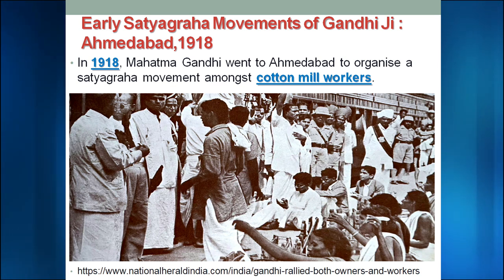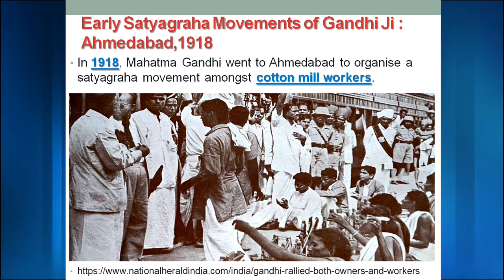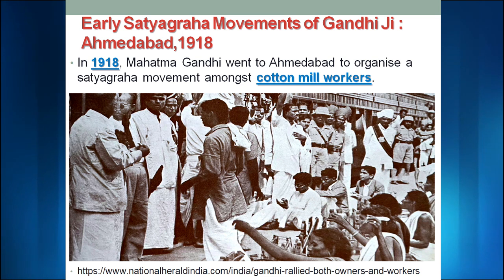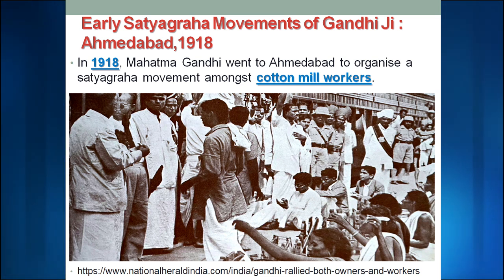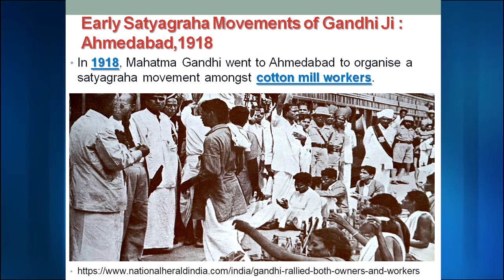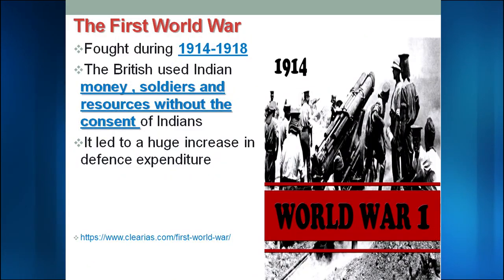The next movement was the Ahmedabad Mill Workers Movement, which was related to industrial problems. The mill owners of Ahmedabad were exploiting the mill workers. Gandhi Ji united the workers and motivated them to fight on the basis of Satyagraha and Ahimsa. Ultimately, the owners were forced to accept the demands of the laborers. All three movements were very successful.